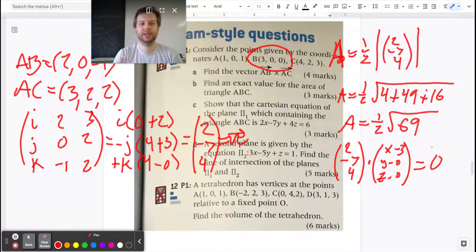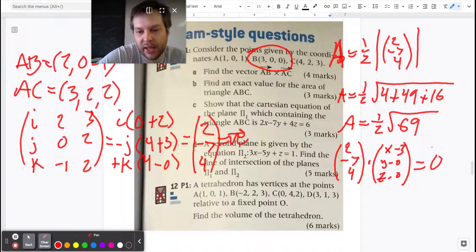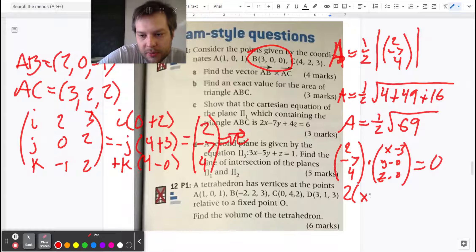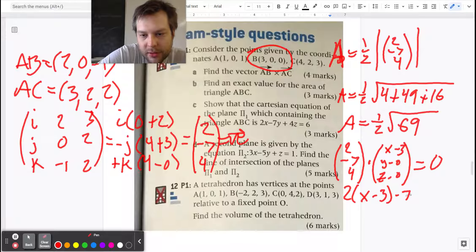And so we get 2 times (x-3) minus 7y plus 4z equals zero.